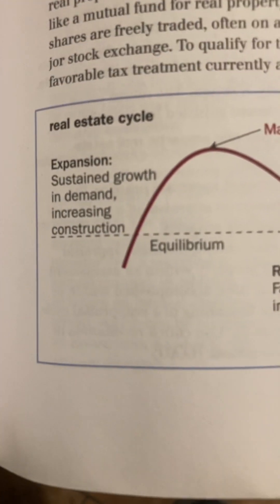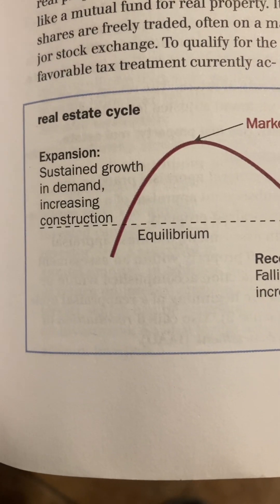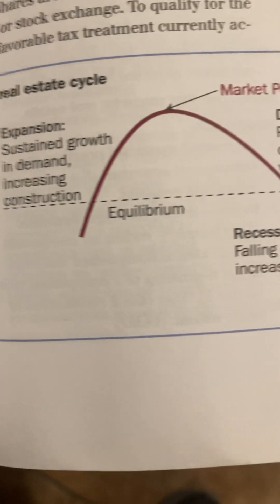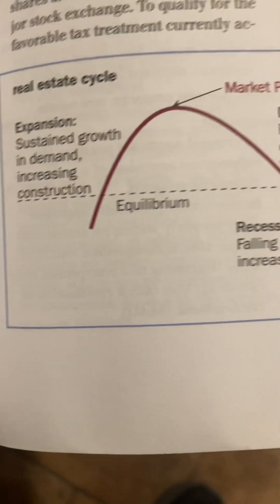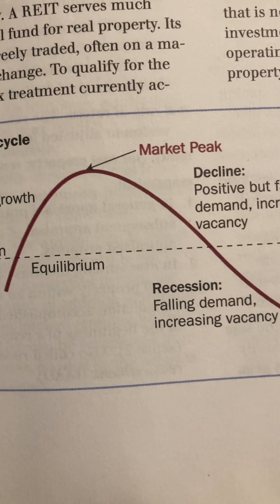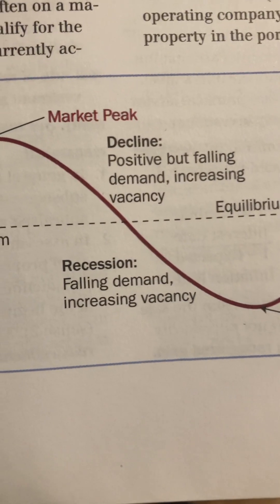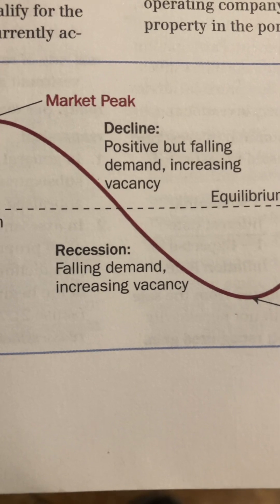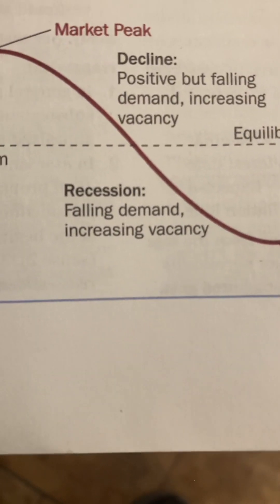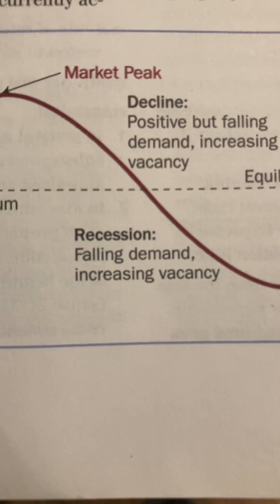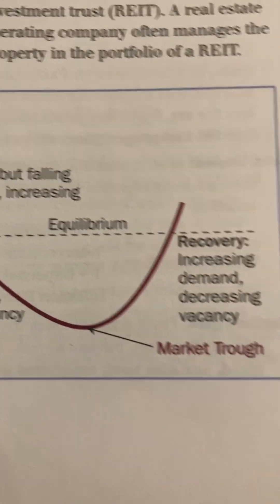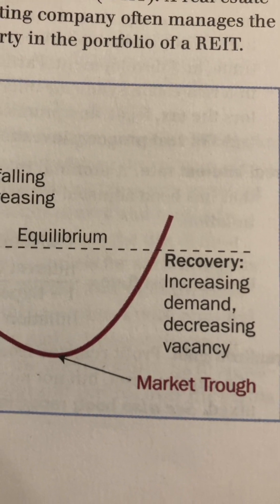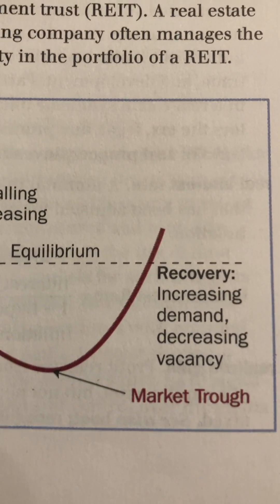Real Estate Cycle diagram: Expansion — sustained growth in demand, increasing construction. The dotted line represents equilibrium. At the top is the market peak. Decline — positive but falling demand, increasing vacancy. Below equilibrium is the recession — falling demand, increasing vacancy. At the bottom is the market trough. Then eventually recovery — increasing demand, decreasing vacancy.